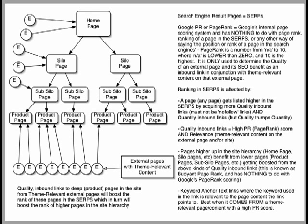In the previous video, I showed you that we might have more than one, two, three, or whatever website properties that we want to build links into from external sites like content sharing services, webpages, and Squidoo lenses. But this diagram shows you basically one of those sites and how it's constructed.